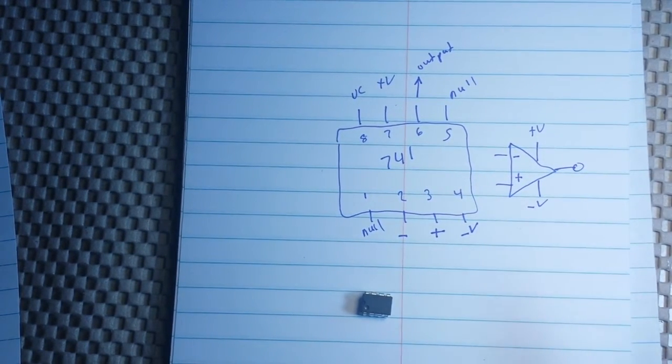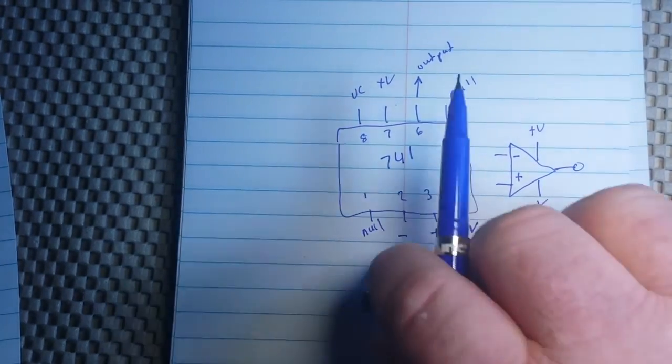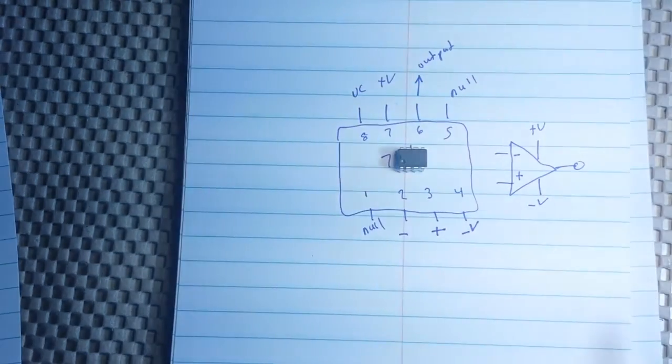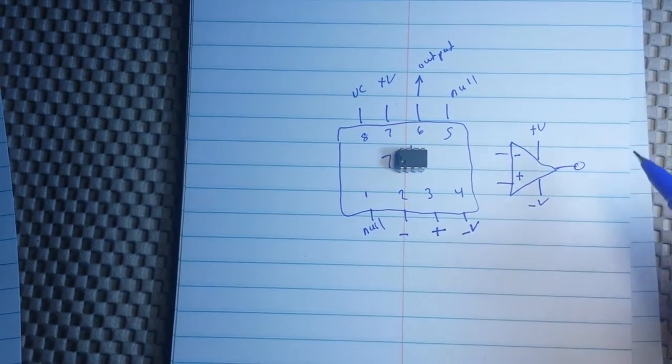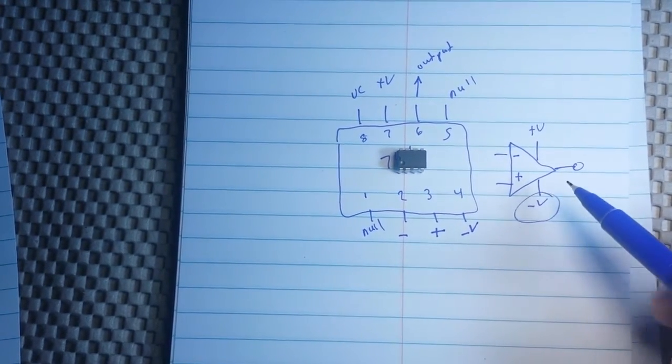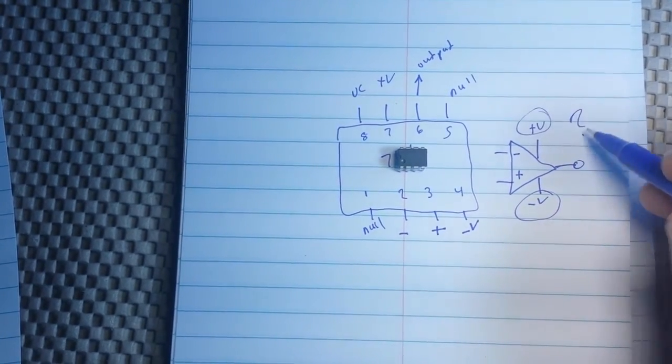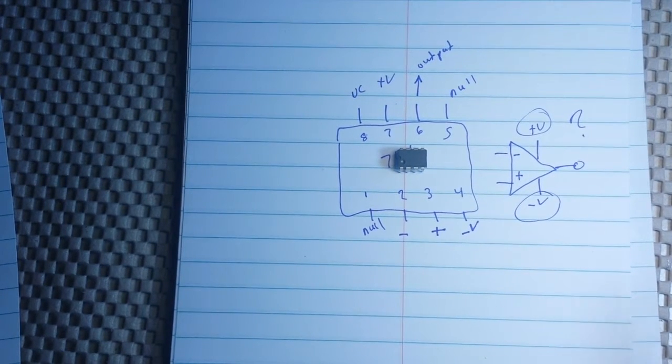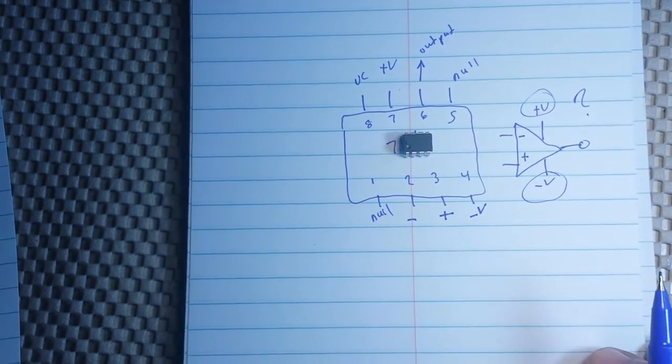Now, there are thousands of things that we can do with the op amp. It's an incredibly useful chip. But we need to give it the negative voltage and the positive voltage. And if you're a beginner at electronics, that can be a little bit confusing. So, how can we do that?